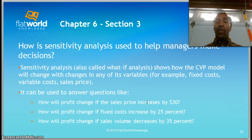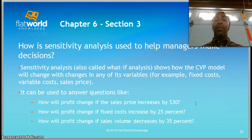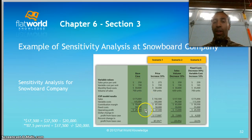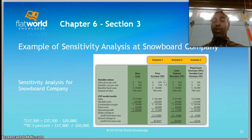Sensitivity analysis answers questions like: How will profit change if the sales price increases by $30? How will profit change if fixed cost increases by 25%? How will profit change if sales volume decreases by 35%? Looking at the scenarios: in the base case, price is $250 and operating profit is $20,000. If price increases 10% to $275, operating profit rises to $37,500.